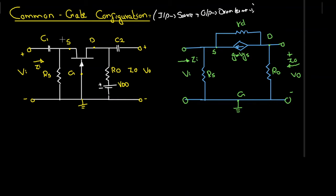We place the AC equivalent circuit in place of the JFET. This gives us a voltage-dependent current source, the output resistance of the JFET which is rd, and the gate and source terminals are open-circuited.